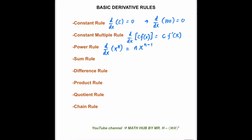The fourth rule is what we call the sum rule. Say we have d/dx of f(x) plus g(x). To find the derivative of that will be equal to f prime of x plus g prime of x. It's just basically finding the derivative of each term.